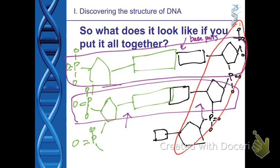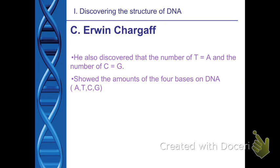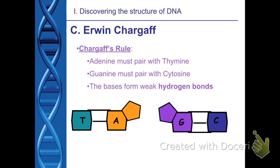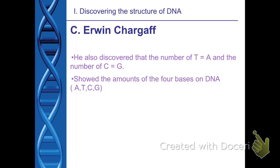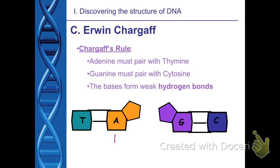Each step can be A, T, G, or C — adenine, thymine, guanine, or cytosine. Erwin Chargaff discovered the rules of base pairing: T always pairs with A, and C always pairs with G. So A always pairs with T, and G always pairs with C.